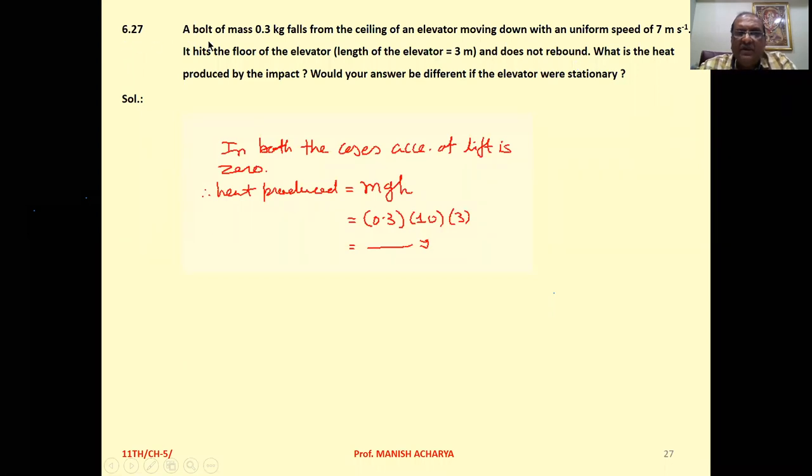Problem 6.27: A bolt of mass 0.3 kg falls from the ceiling of an elevator moving down with a uniform speed of 10 m/s. It hits the floor of the elevator, length is 3 meters, and does not rebound. What is the heat produced by the impact? Would your answer be different